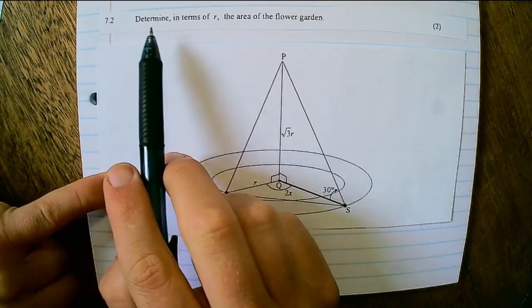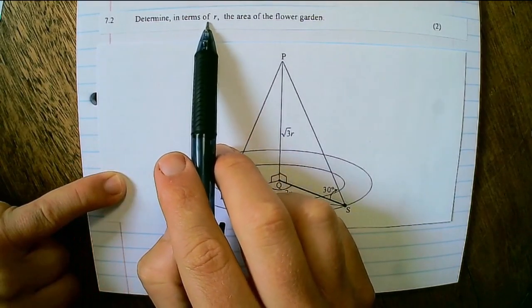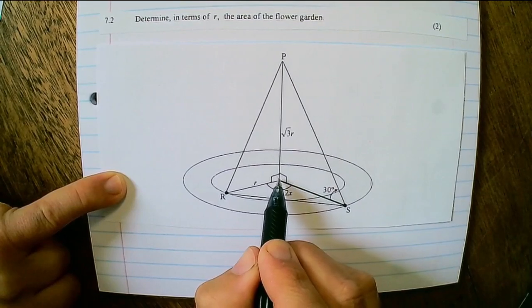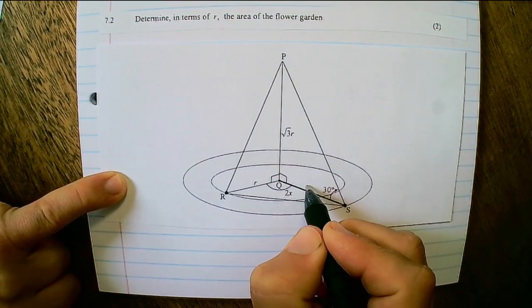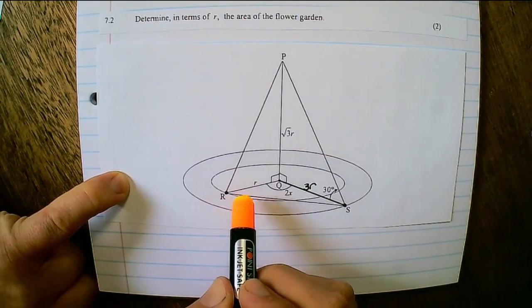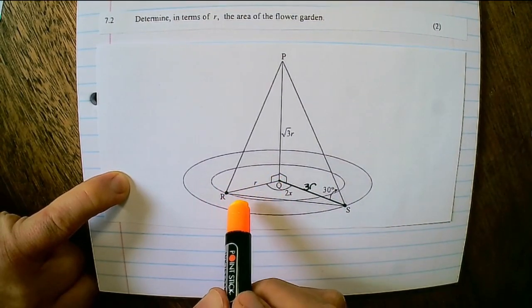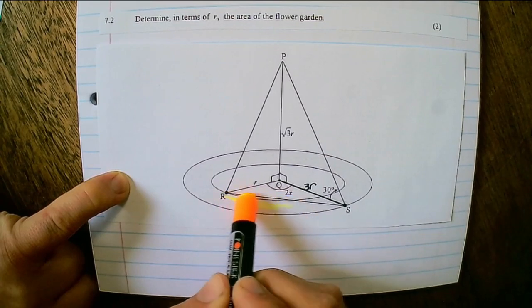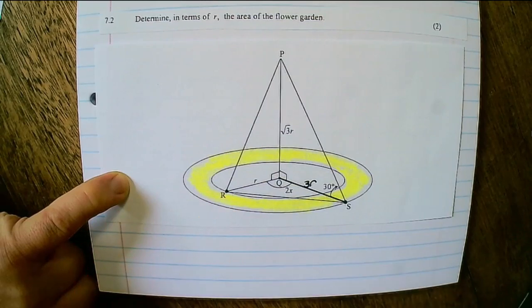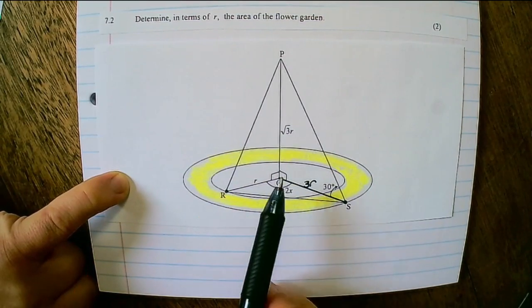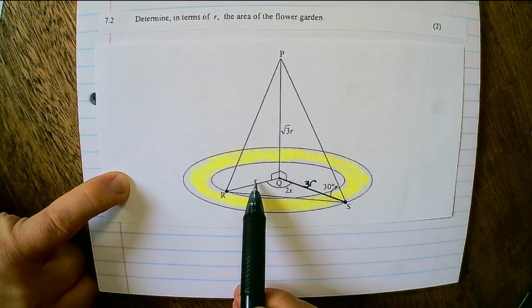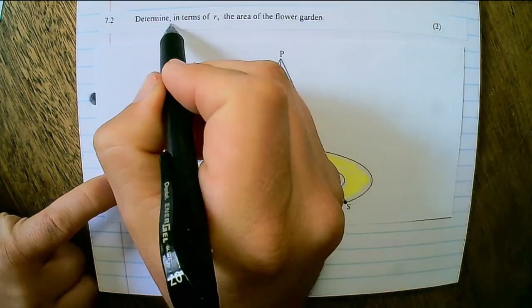7.2. Determine in terms of R the area of the flower garden. Now we know the length of QS is 3R. And the information given was that the flowers will be planted within two concentric circles. So the flowers will be planted within the highlighted area. Now we have the radius of the bigger circle and we have the radius of the smaller circle in terms of R.